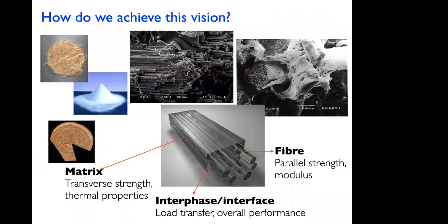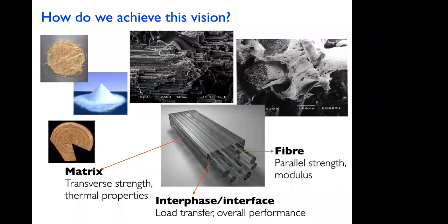We propose using composite materials. For those not familiar, composite materials are made out of two or more distinct materials — typically fibers, where the fiber provides rigidity, modulus, and strength. The fibers are encapsulated by a polymer matrix, which protects the fibers and provides transverse and thermal properties. The contact point between the polymer matrix and the fiber is called the interface, which governs overall load transfer and mechanical performance of the final composite.